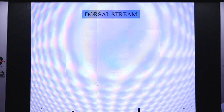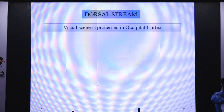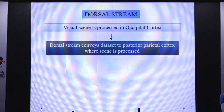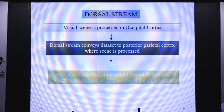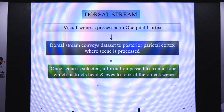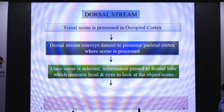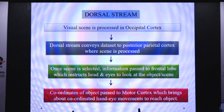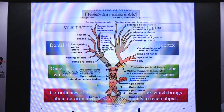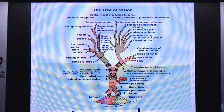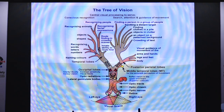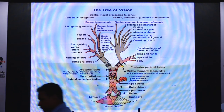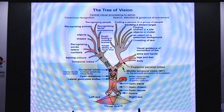The dorsal stream is the most integrating part. The visual scene is first processed in the occipital cortex, then the dorsal stream conveys this data to the posterior parietal cortex where the scene is processed. Once selected, information passes to the frontal lobe which instructs the head and eyes to look at the object. Finally, coordinates of objects are passed to the motor cortex, which brings about coordinated hand-eye movements. This is illustrated by a 'tree of vision' showing the visual scene passing via retina, optic nerves, optic tracts, lateral geniculate body, optic radiations, to the occipital lobe, then relating to temporal and posterior parietal lobes.